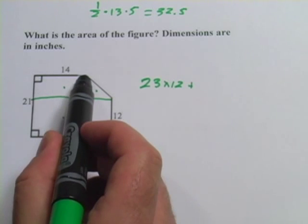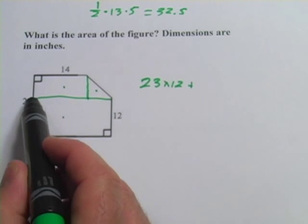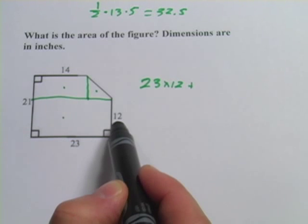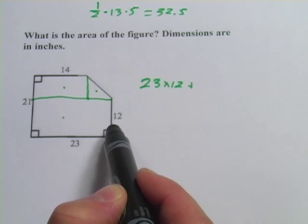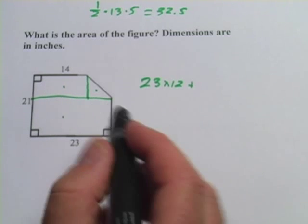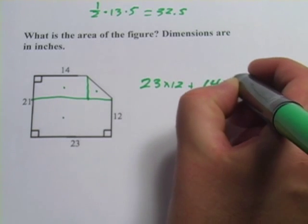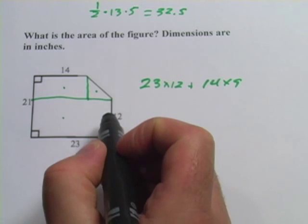Now this one, one side of it is 14, this rectangle, and this other side, well, the whole length is 21, so I have to subtract 12 from 21, so I've got 9, so 14 by 9.